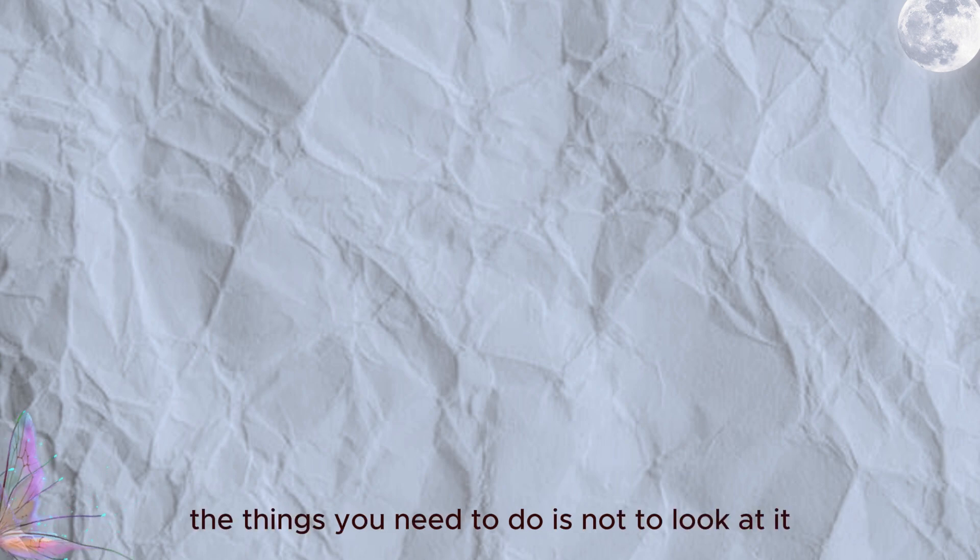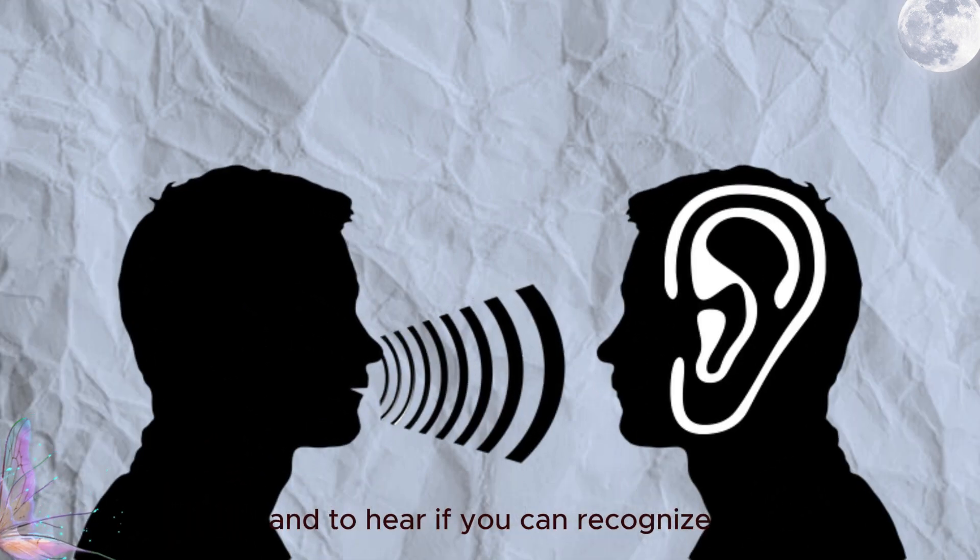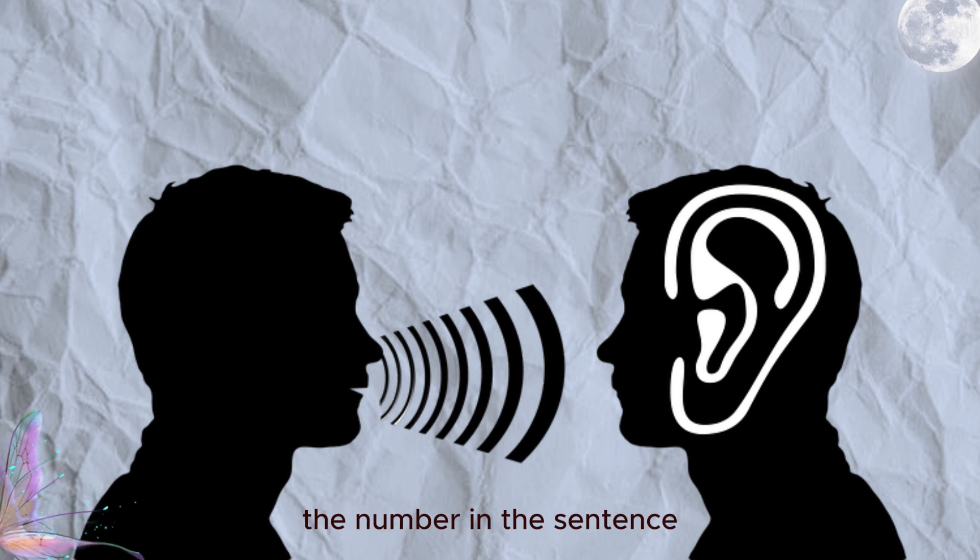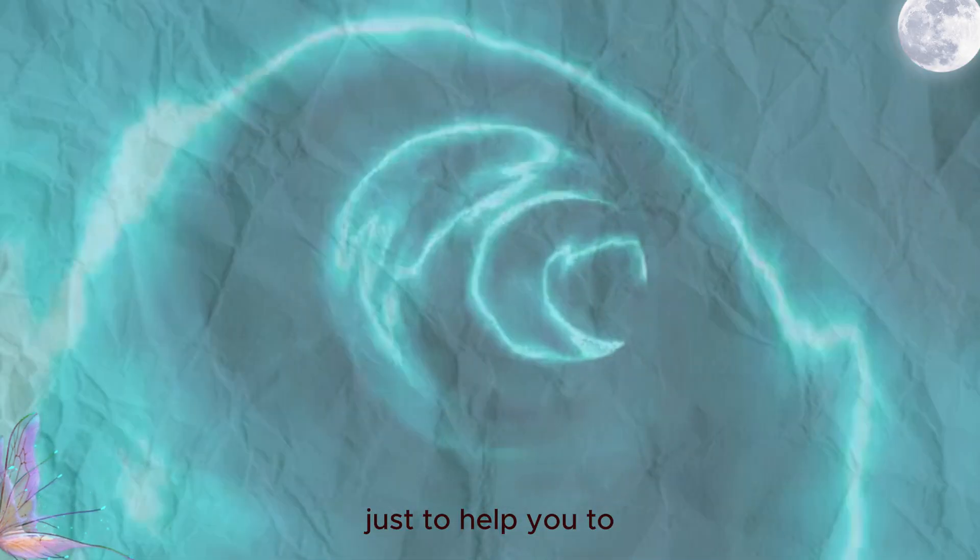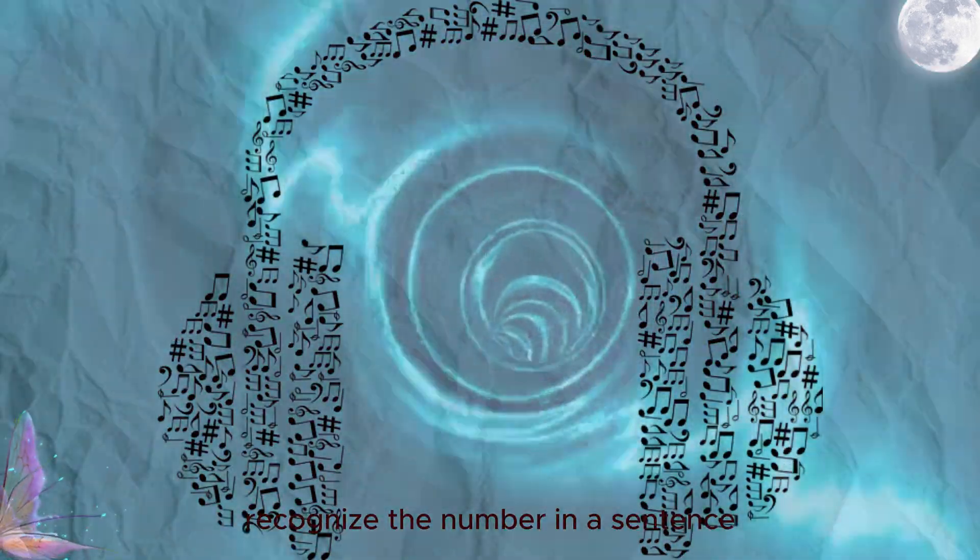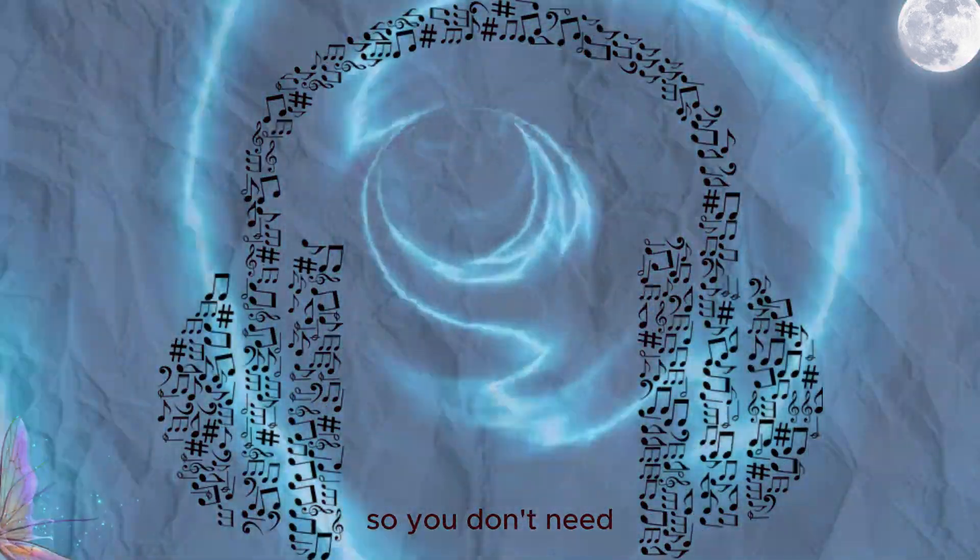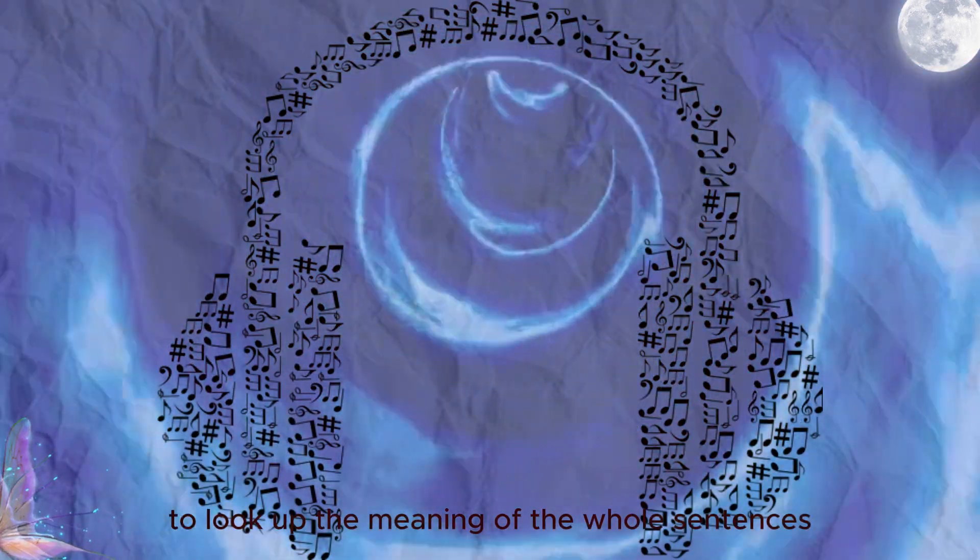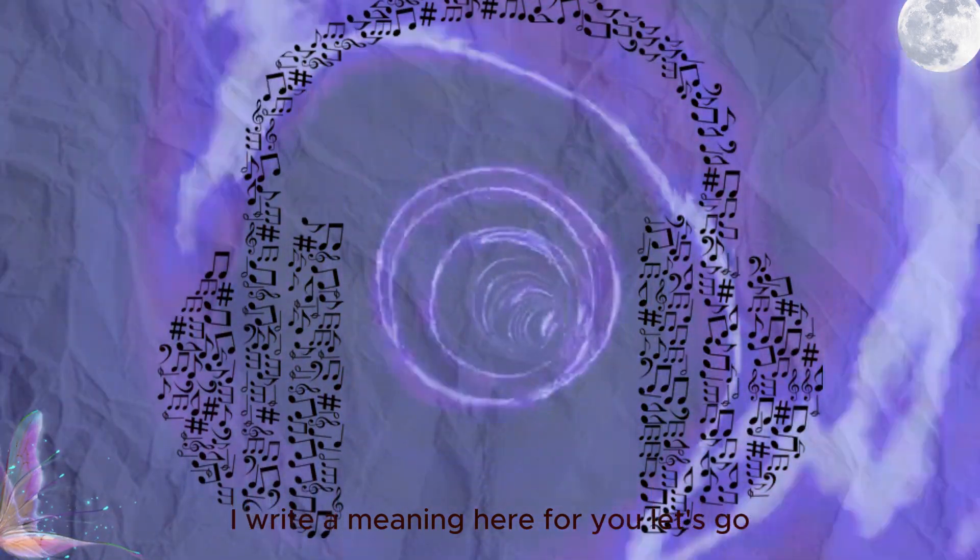Now comes to exercise number 2. I will say Vietnamese in a sentence which you don't know. The thing you need to do is not to look at it and to hear if you can recognize the number in a sentence. The purpose of this exercise is just to help you to recognize the number in a sentence. So you don't need to look up the meaning of the whole sentences. I will write the meaning here for you.